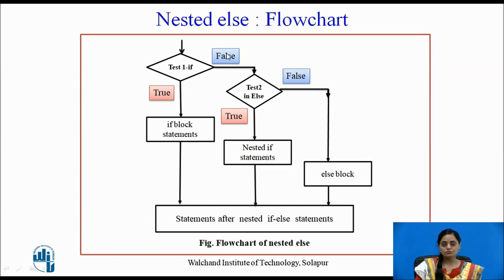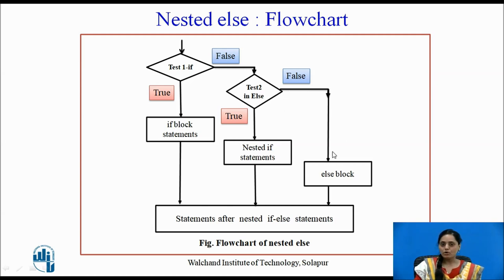If test1 evaluates to false, we have included test2, which indicates another if-else block included within the else counterpart. So if test2 happens to be true, the nested if statements will be executed. If test2 happens to be false, the else block of test2 will be executed. In all three scenarios, after executing the respective if or else block statement, the program will continue to execute statements just below the nested structure.